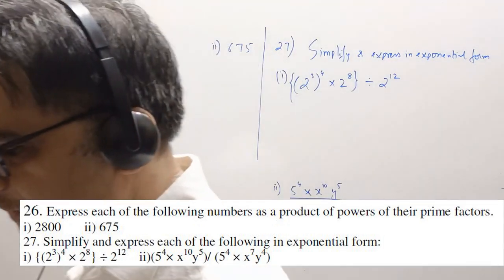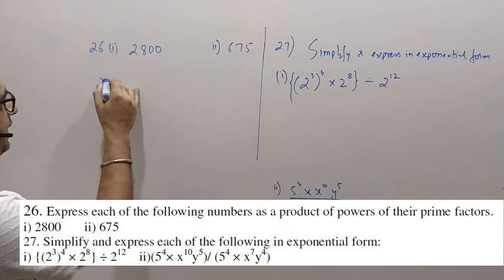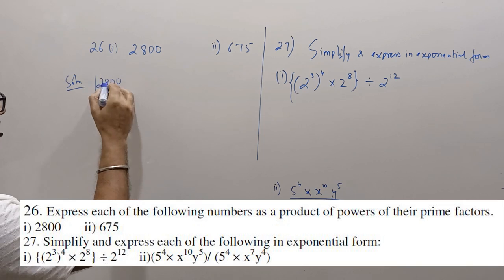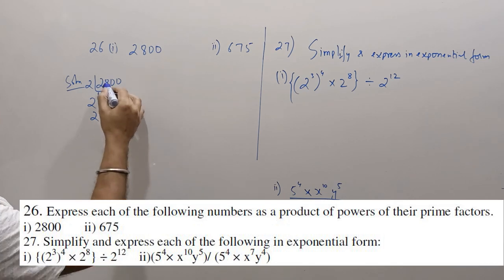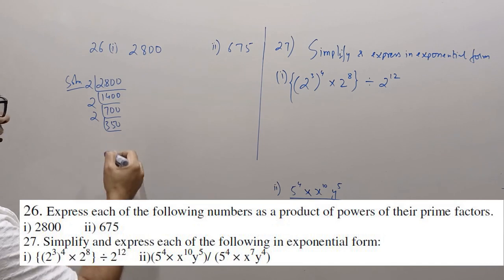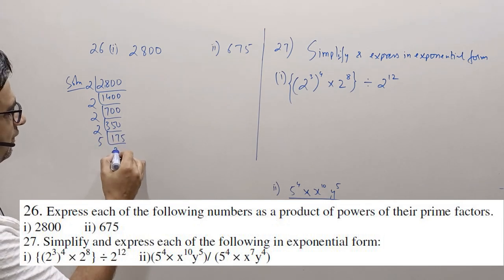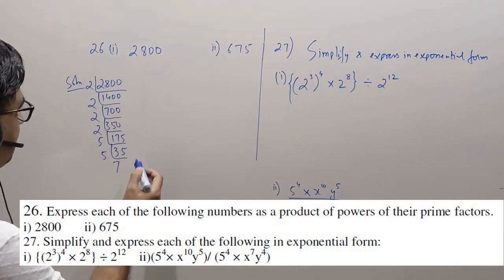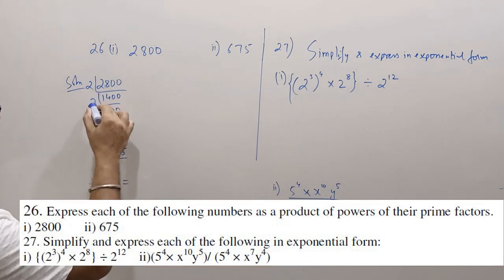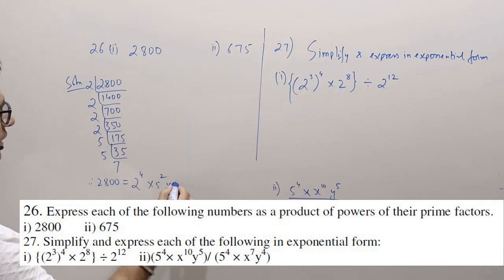Coming to question number 26. Express each of the following numbers as a product of powers of their prime factors. We've got to factorize and express this as powers of prime factors. 2800: it's 2 into 1400, then 2 into 700, 2 into 350, 2 into 175. 175 is not divisible by 2 or 3, so try 5. Therefore 2800 can be written as 2 to the power 4 into 5 squared into 7.